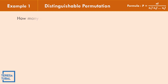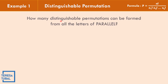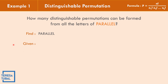In example number one, how many distinguishable permutations can be formed from all the letters of the word PARALLEL? We need to identify the permutation of PARALLEL. If we count the letters, that is 1 through 8. So n is equal to 8.